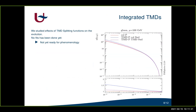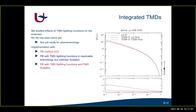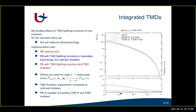Up to now we studied effects of TMD splitting functions on the evolution, but we have done no fits yet and are not yet ready to use the TMDs obtained here in phenomenology. We can already learn interesting things from this. I show the gluon integrated TMD versus x, where the red curve is the normal parton branching method, the blue curve uses TMD splitting functions in resolvable branchings with a collinear Sudakov form factor, and the purple curve is the complete implementation including the TMD Sudakov form factor. In the large x region the effects of the TMD splitting functions are small, which is reasonable since they are a continuation of the DGLAP splitting functions.